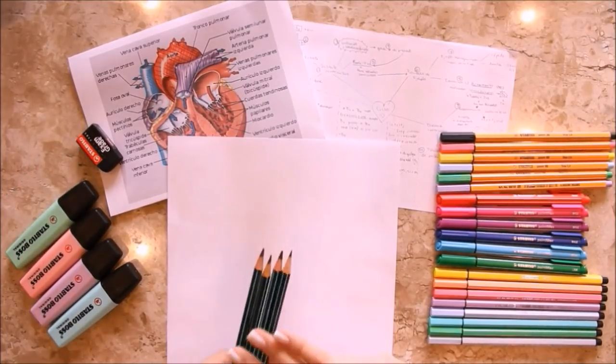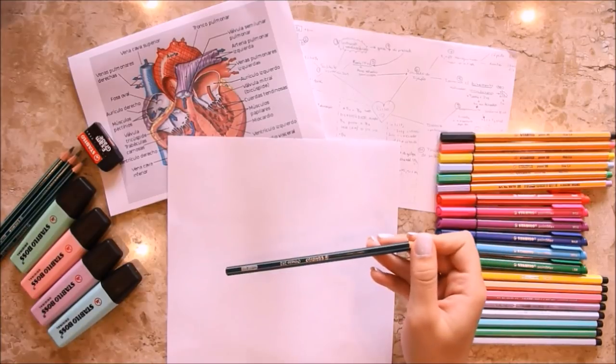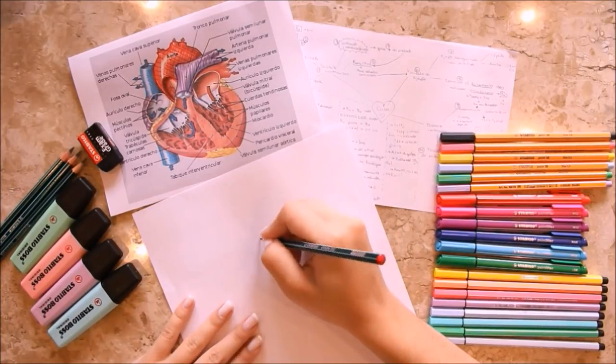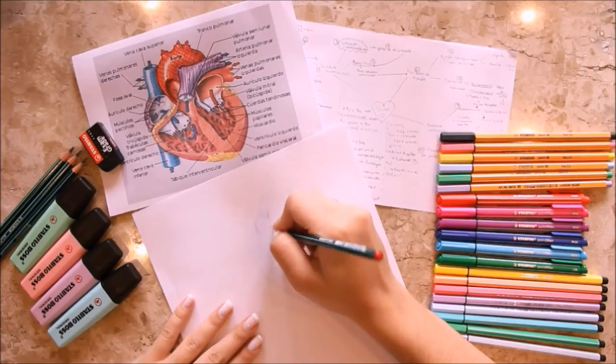Well, the first thing I did was select an image of the heart, an image that pleased me, that was very anatomical so I could copy it, and also get a scheme I had already made in class during a lecture to copy neatly.